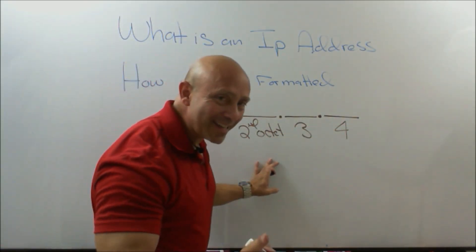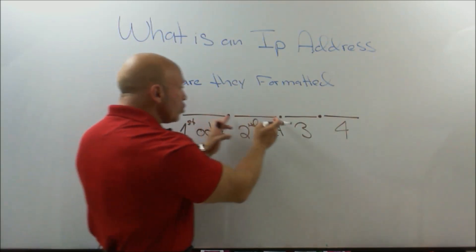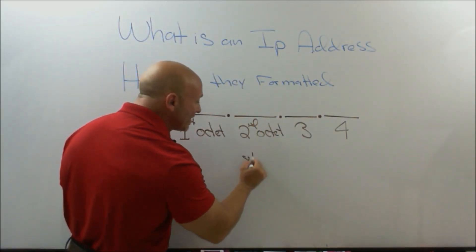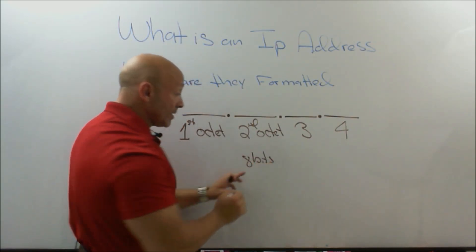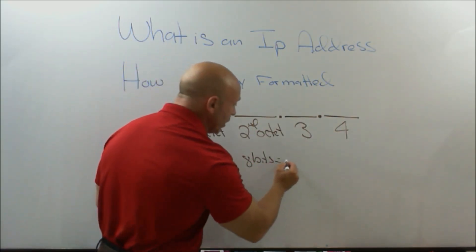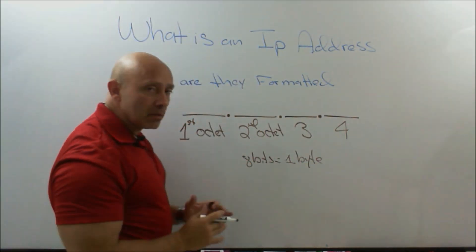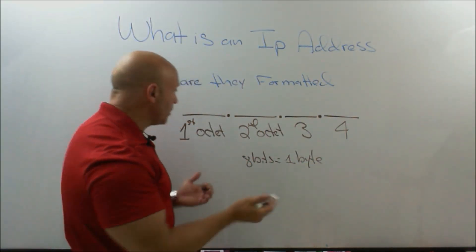And what do we mean by octet? That each one of these octets are eight bits because eight bits creates what? One byte, correct? So we have a combination of ones and zeros.